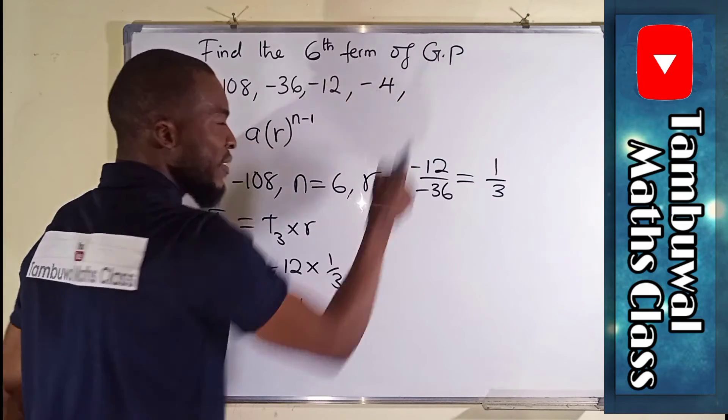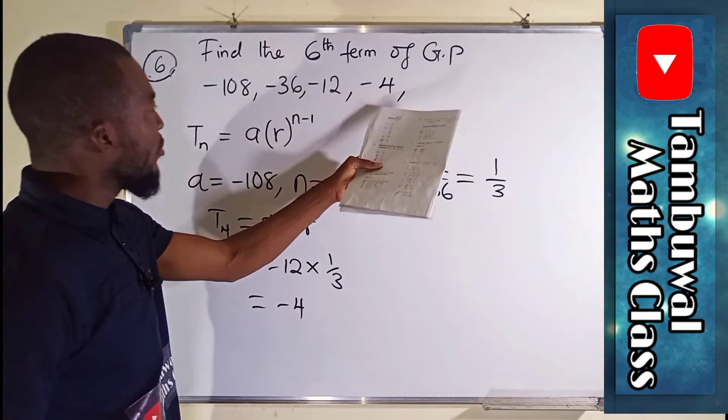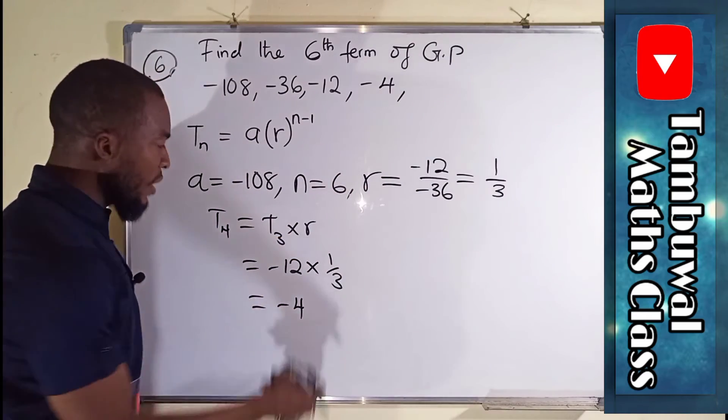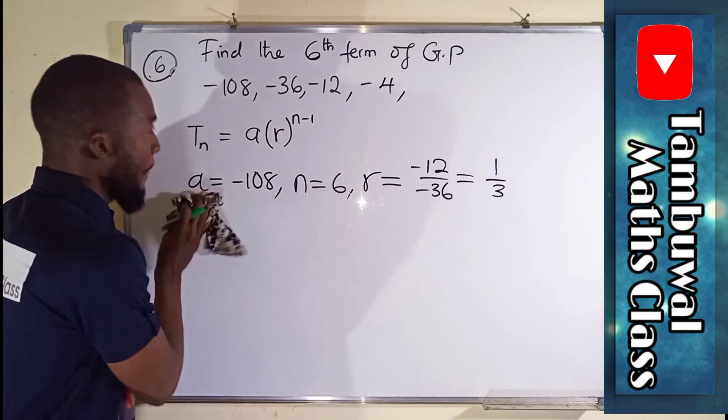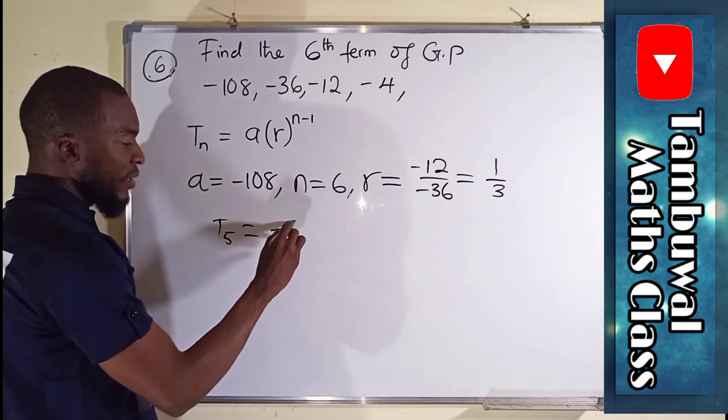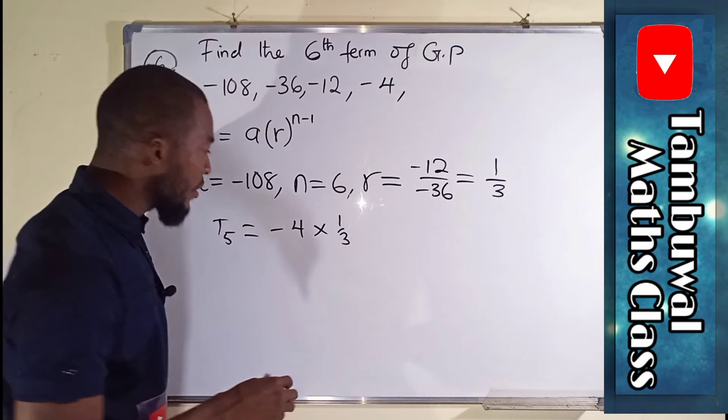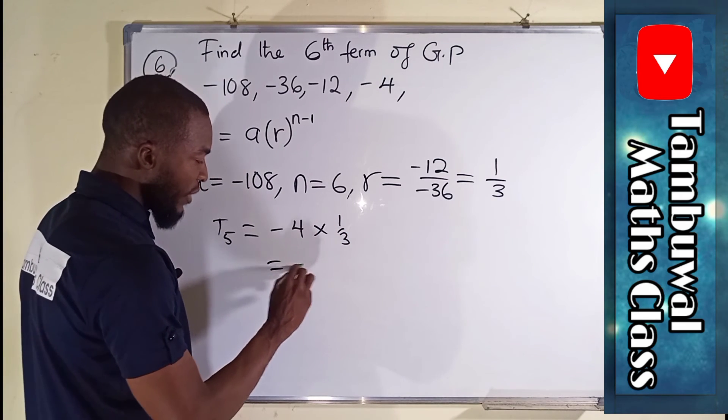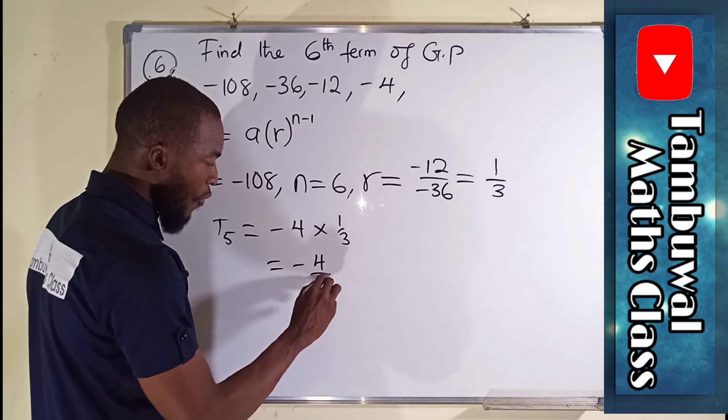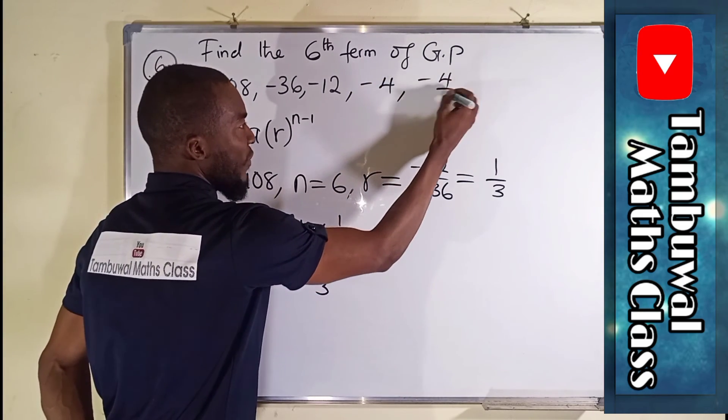To obtain term number 6, we are going to multiply term number 4 by the common ratio again. Term number 5 is the same thing as negative 4 times 1 over 3, which is R, and this is equal to negative 4 over 3. So the next term is going to be negative 4 over 3.